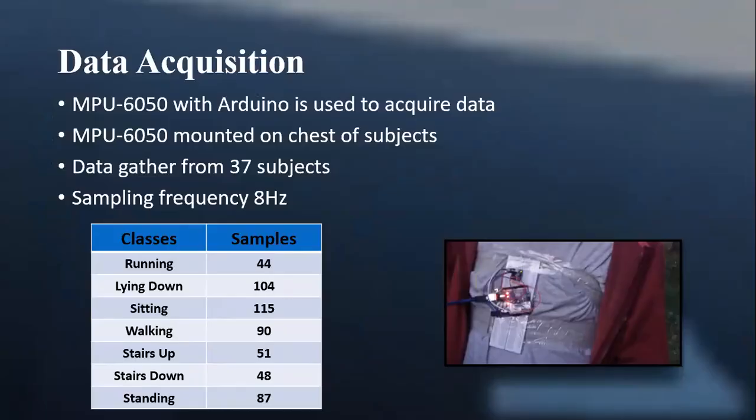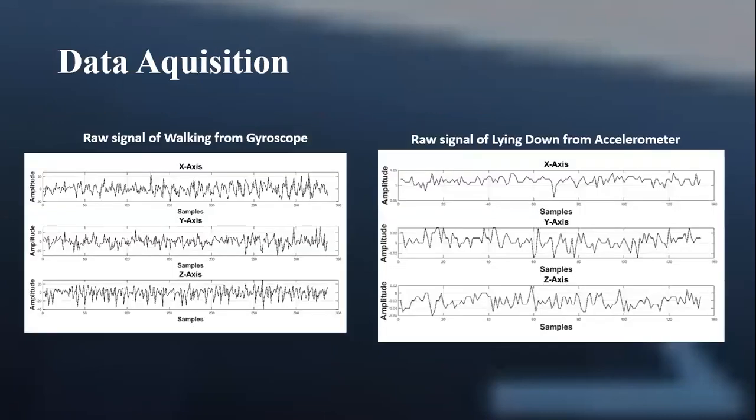Data acquisition: For gathering data, we used MPU-6350 that interfaces with Arduino. MPU-6350 was mounted on the chest of different subjects. Data gathered from 37 subjects. Total 539 samples were taken at sampling frequency of 8 hertz. This table shows the number of samples of each class that were obtained. This figure shows the raw data of walking and lying down gathered from gyroscope and accelerometer.